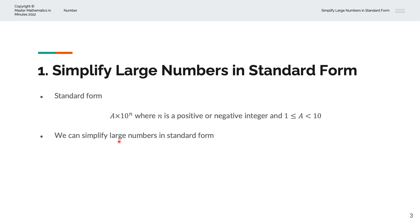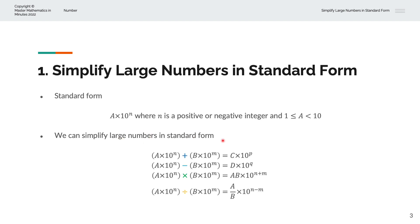We can simplify large numbers in standard form. Firstly, consider the case where we add two large numbers in standard form. We will first add these two numbers, and then convert that into standard form c times 10 to the power of p.